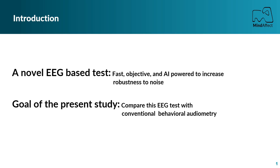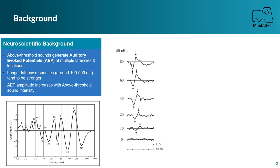To evaluate this new EEG test, we conducted a study in Oldenburg Hörzentrum on 15 participants to compare its performance with the conventional behavioral test, pure-tone audiometry. The fundamentals of this EEG test lie in the extraction of the brain response elicited by auditory stimulation. Auditory stimulation evokes a cascade of cortical potentials, called auditory evoked potentials, or AEPs, at different latencies.